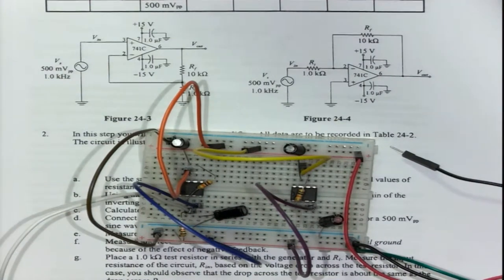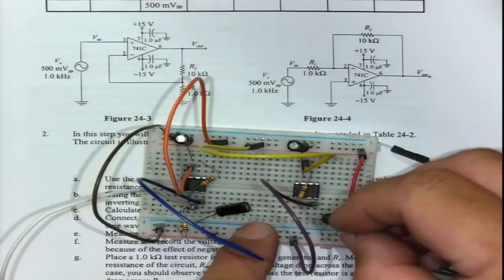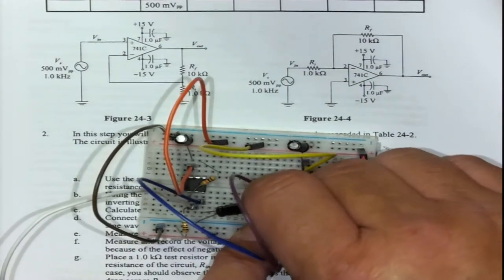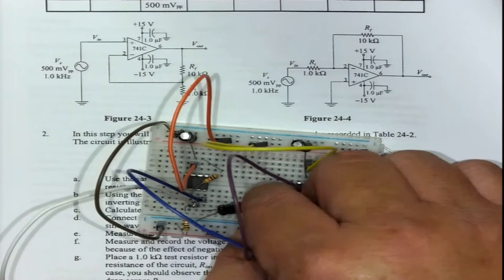Then the 1 kilo ohm goes there towards the input. I can plug it in here. Pin 2 going to some point where it is convenient.